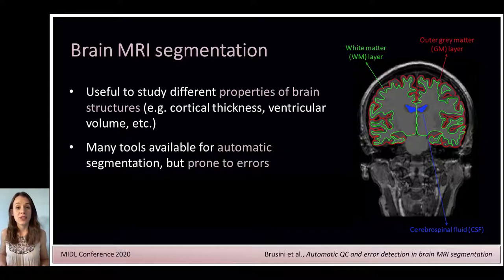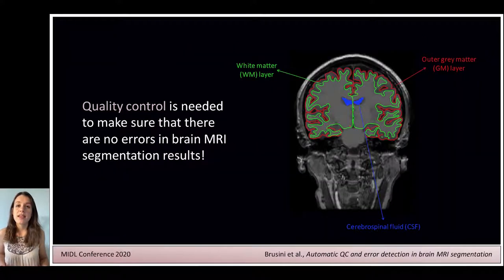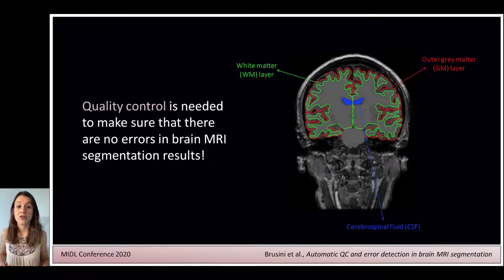Many automatic segmentation tools are currently available, but it is known that they will always be prone to errors somehow. That is why it is important to perform quality control on all segmentation results. This is usually done visually by expert raters, but these tasks can be extremely time-consuming and subjective.